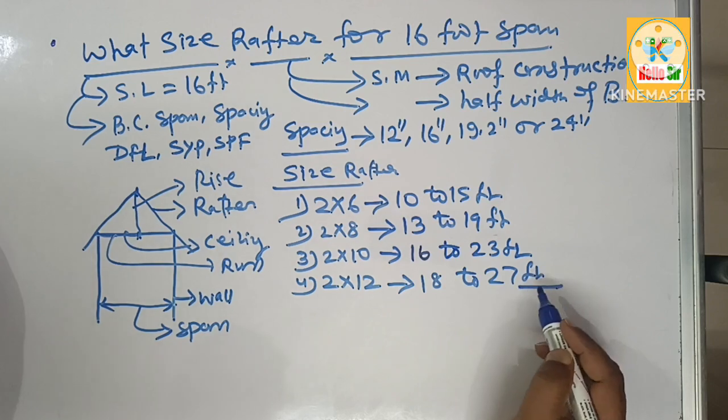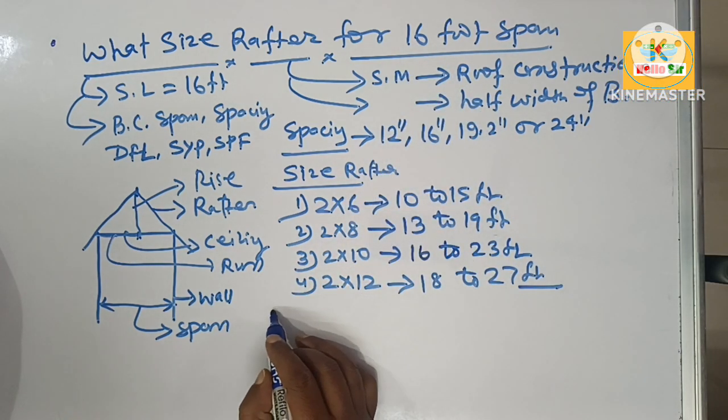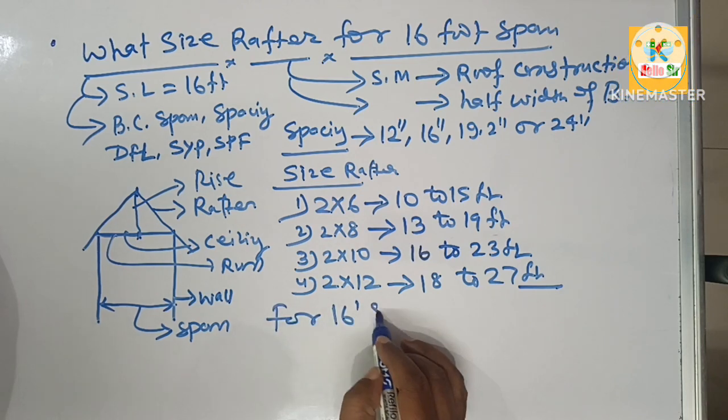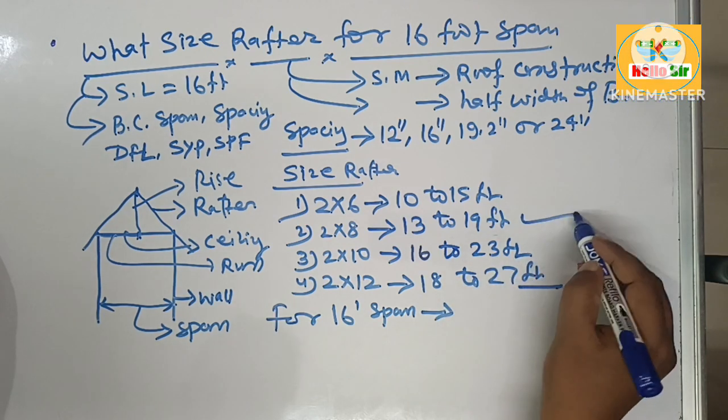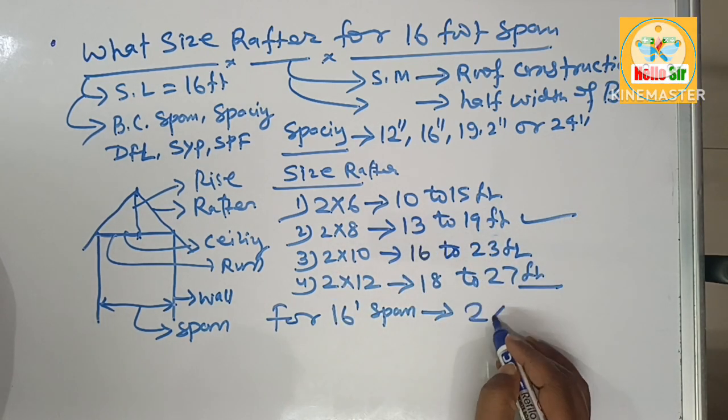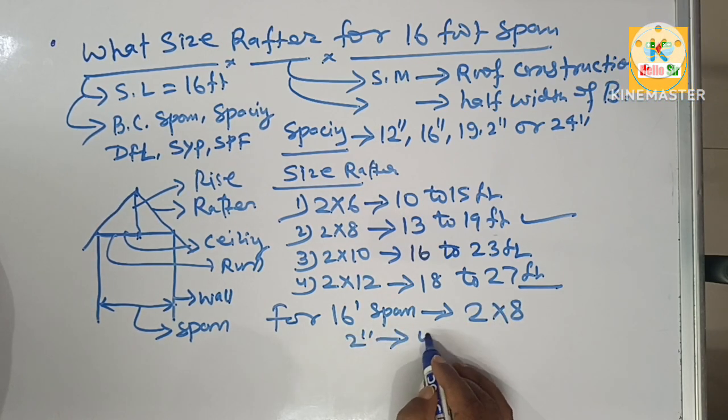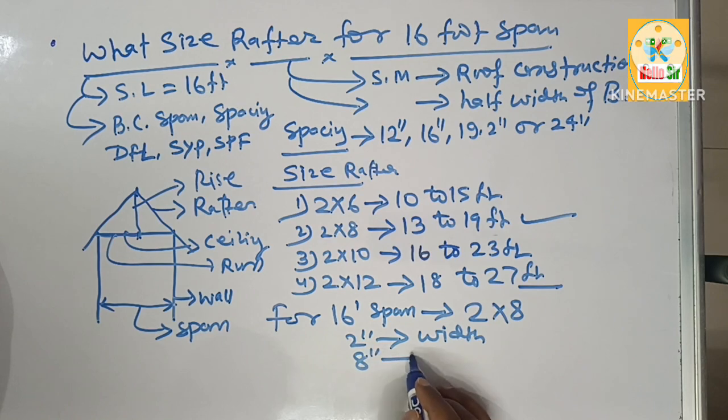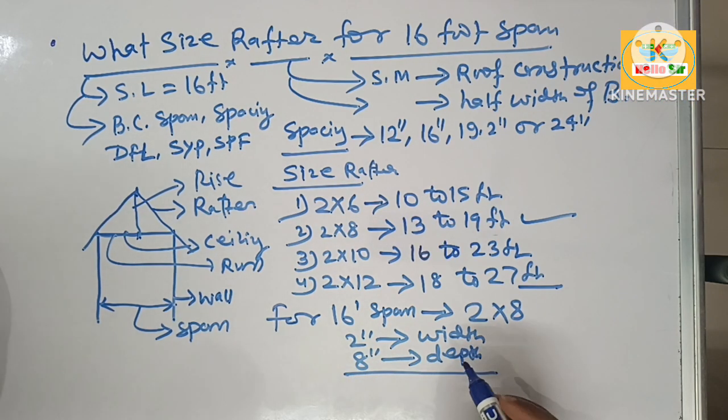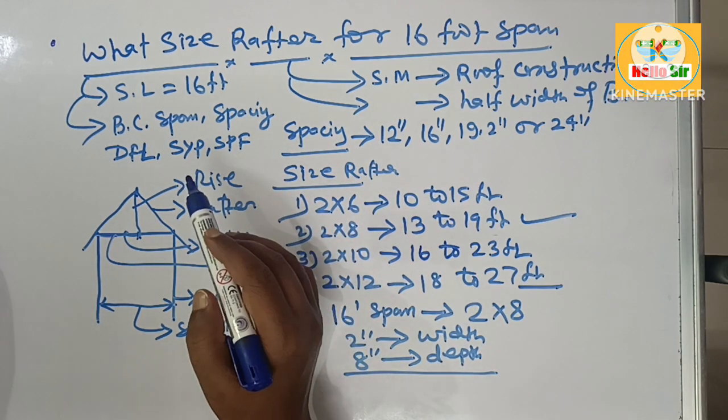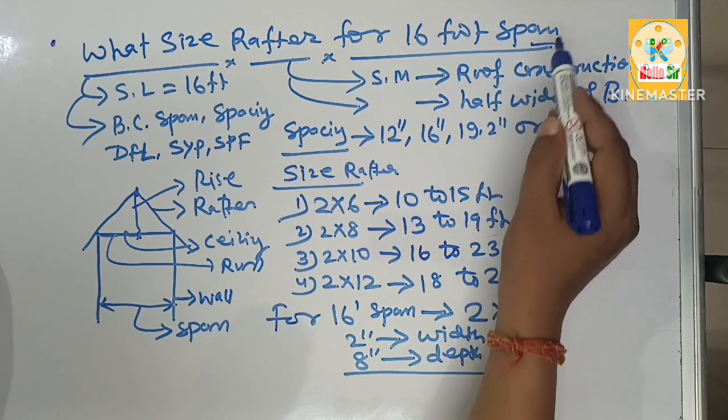Here you have a span length of 16 feet. In general guideline, for a 16 foot span you may need something like 2 by 8 lumber, which means 2 inches in width and 8 inches in depth. That means 2 by 8 inch lumber you need as a rafter to span a 16 foot span length.